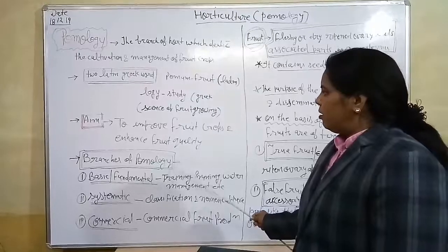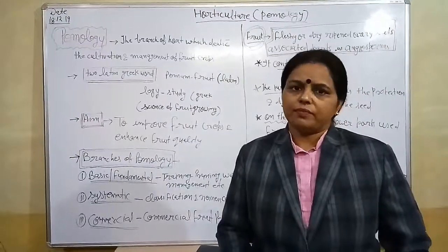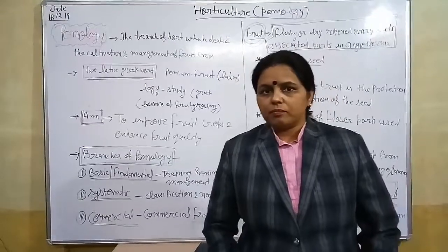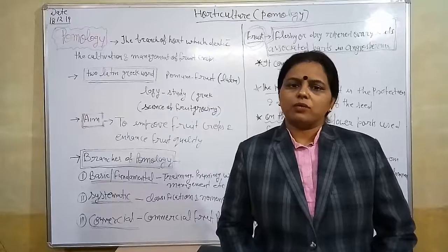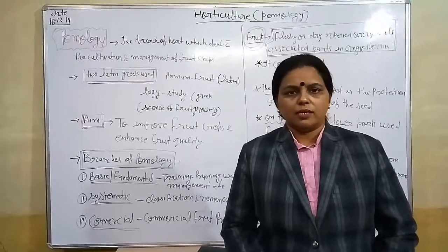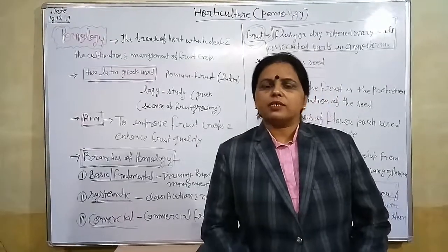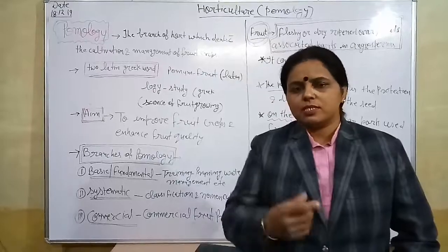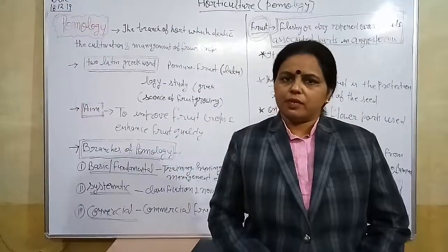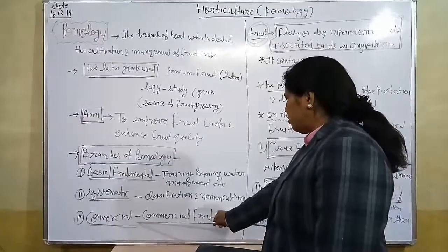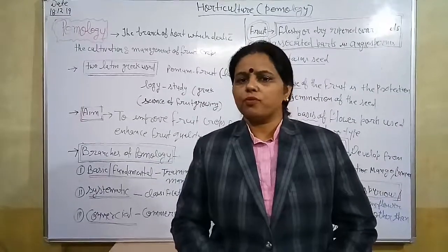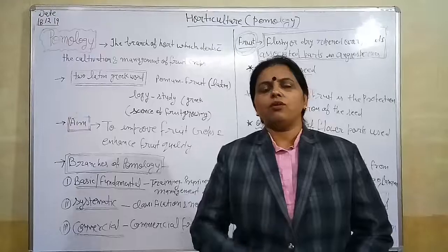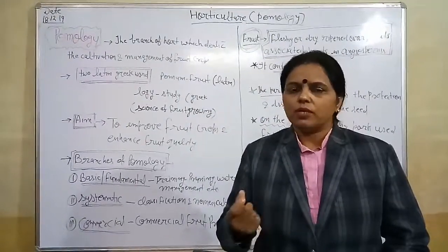Now let's see the branches of pomology. Pomology has been divided into three different branches. Number one is basic or fundamental pomology — in fundamental pomology we study fundamental aspects related to fruit crop production like training and pruning of fruit crops, water management, seed bed preparation, etc. Number two is systematic pomology — in systematic pomology we study about the culture and classification of fruit crops. Number three is commercial pomology — in commercial pomology we study about the commercial aspects of fruit production.